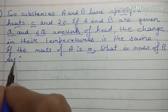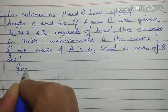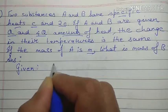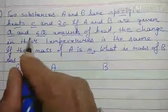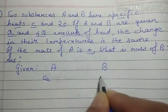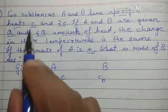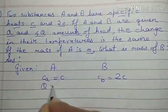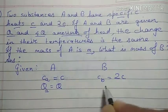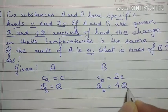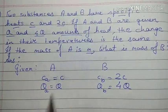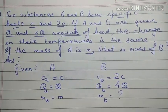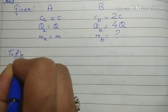When you read this problem it might seem a little difficult, so the best step is to first write whatever is given. So let's have A here and B here. Specific heat: c_A is c and c_B is 2c. Heat: q_A is q and q_B is 4q. The mass of A is given, so m_A equals m, and we need to find the mass of B.